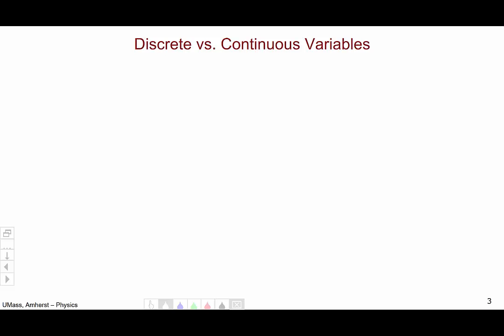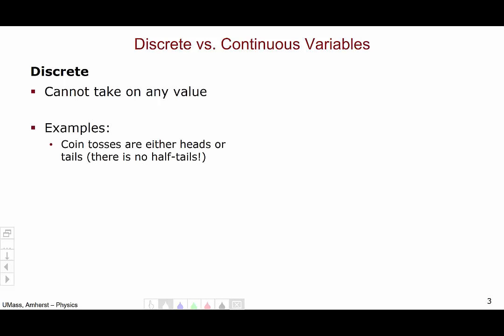Let's begin by looking at the distinction between a discrete and a continuous variable. Discrete variables cannot take on any value. For example, coin tosses are either heads or tails. You can't be half and half.